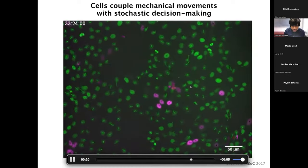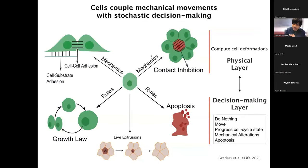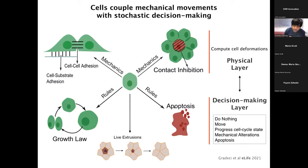What we have been trying to do recently is couple mechanics — which describes the physical behavior of cells like deformations, movement, and morphogenesis — with intelligent rules: how do you grow, how do you time your division or growth, and the rules for death. Apoptosis — the biological term for programmed cell death — means each cell has a life cycle. Sometimes cells get extruded out of the tissue when they're under too much force. We combine these stochastic decision-making rules with the physical behavior of cells to simulate cell competition — how cells compete with one another.